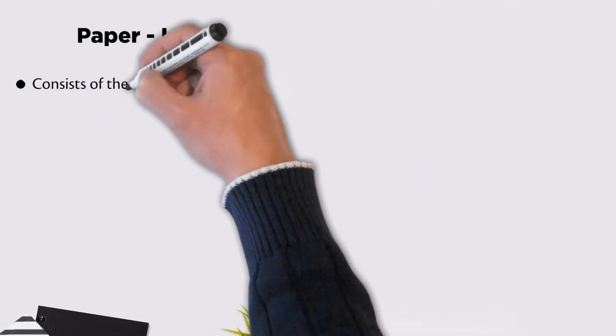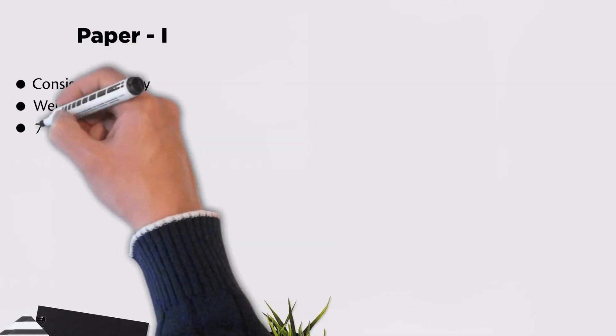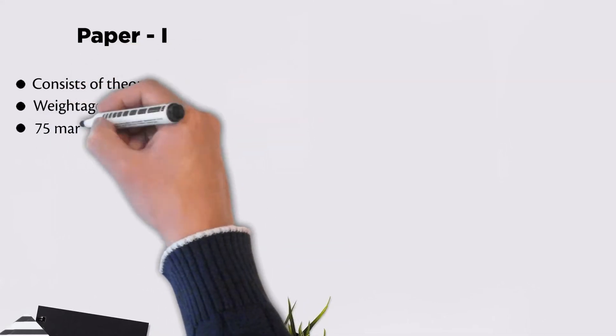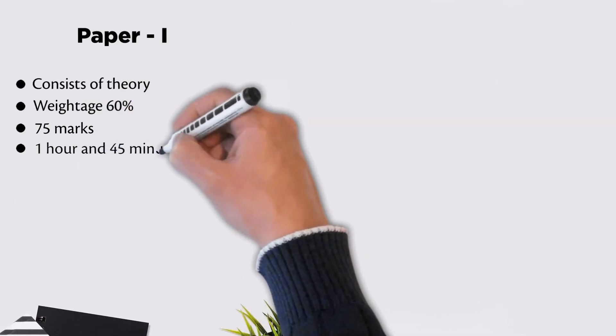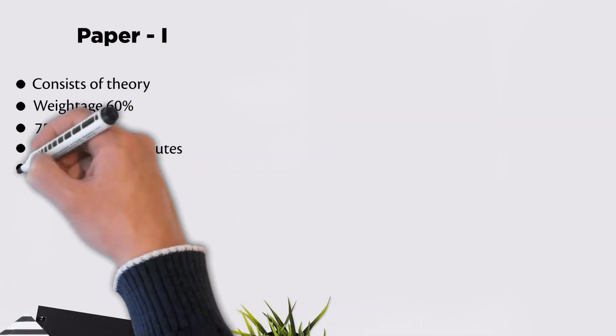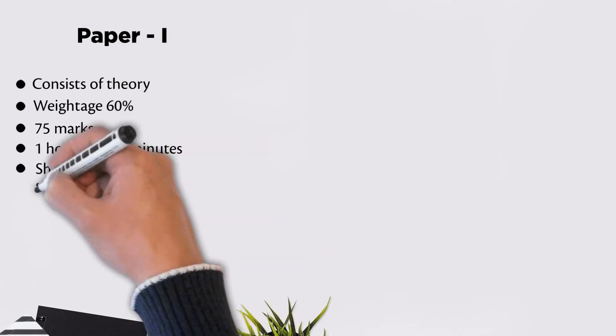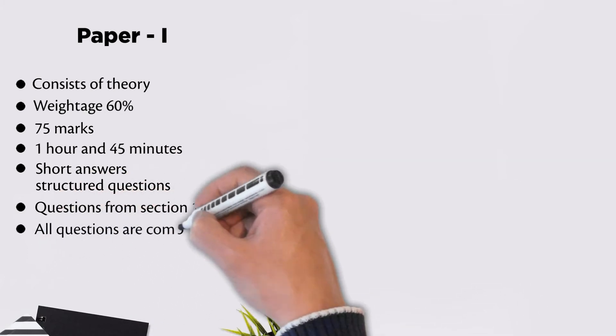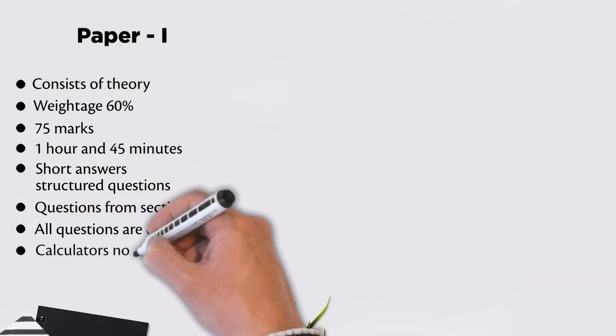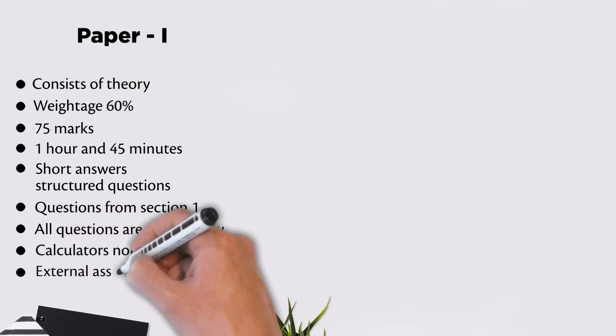Paper 1 consists of theory and has a weightage of 60%. There are 75 marks allocated for Paper 1. Time duration is 1 hour and 45 minutes to complete the exam. The paper consists of short answers and structured questions. The questions will be based upon Section 1. All questions are compulsory and calculators are not allowed. Exam papers are externally assessed.